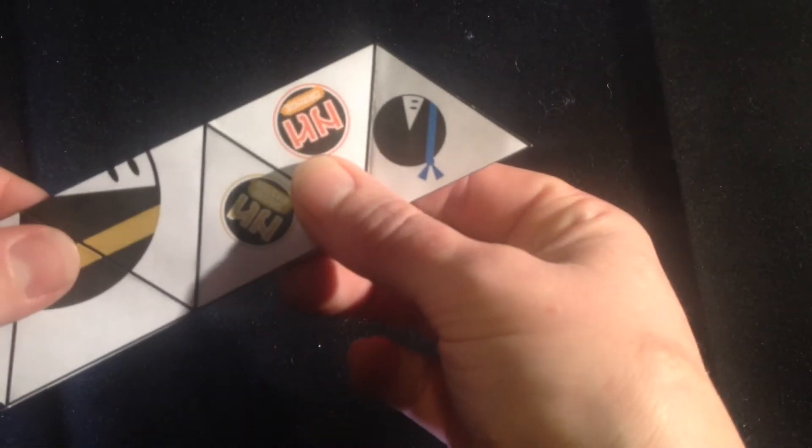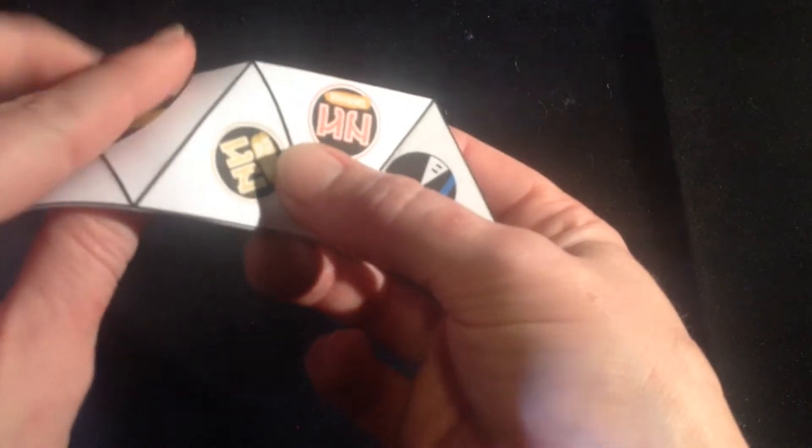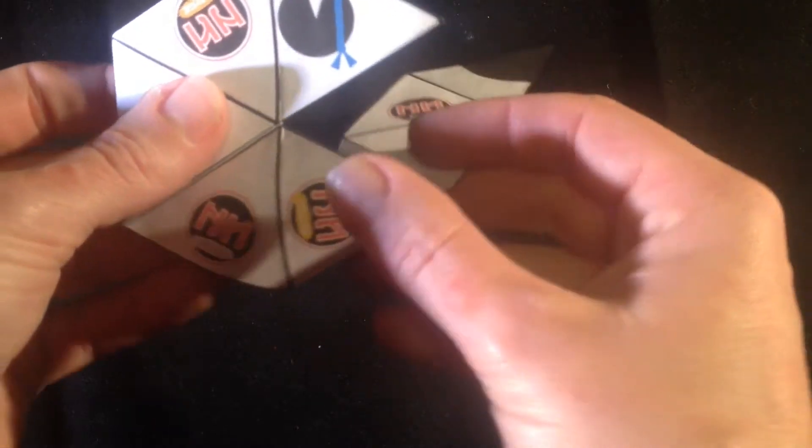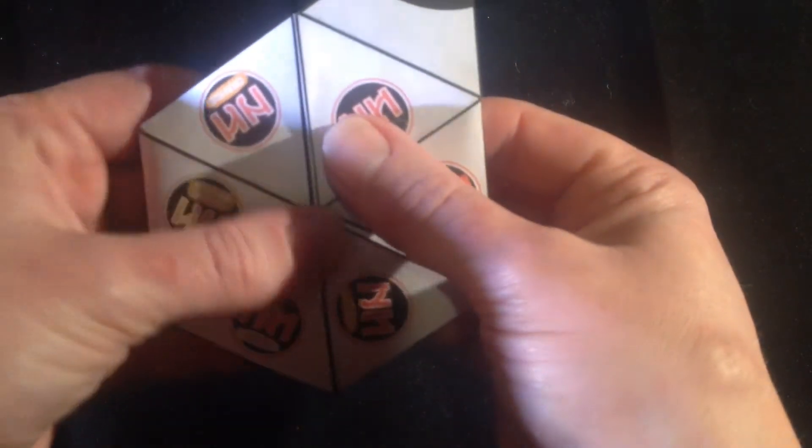Now it's time to make the hexagon shape. Turn it so the Blue Ninja is to the right. Count along to the fourth triangle and fold this triangle underneath. Count along three triangles and fold underneath again. Then lift the end so it is sitting on top of the Blue Ninja.